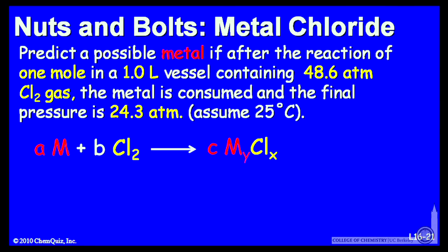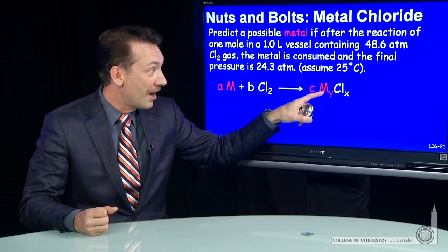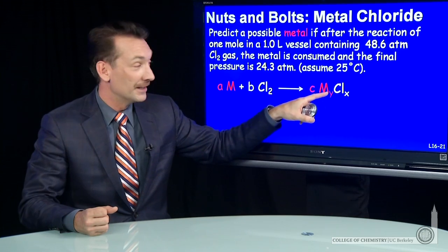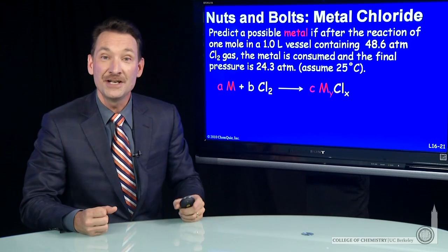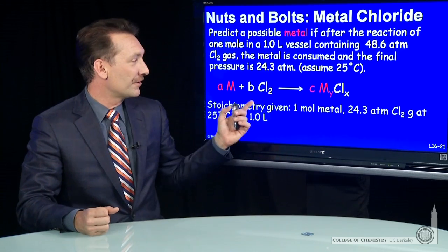We can look at the reaction. A metal reacting with chlorine forms some kind of metal chloride. It's the ratio of the metal to the chlorine, this y to x ratio, that will allow us to predict what metal that is. So let's see if we can figure that out.